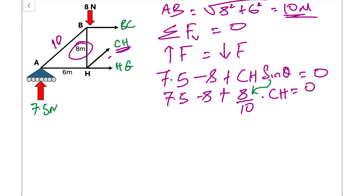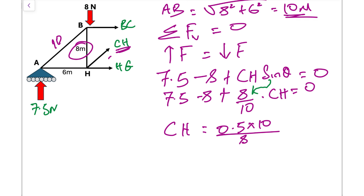Solving: 7.5 − 8 = −0.5, so 0.5 = (8/10) × CH, which rearranges to CH = 0.5 × 10 / 8 = 0.625 newtons. The positive result means member CH is in tension.